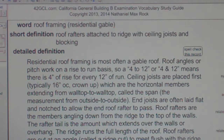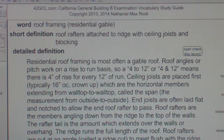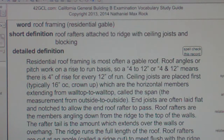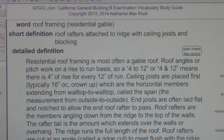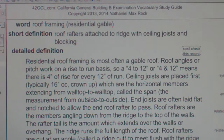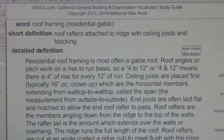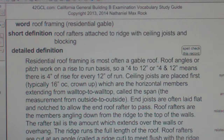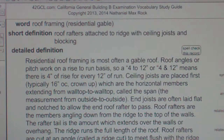Roof framing residential gable roof: rafters attach to ridge with ceiling joists and blocking. Residential roof framing is most often a gable roof. Roof angles or pitch work on a rise to run basis, so a 4 to 12, or 4 and 12, means there is 4 inches of rise for every 12 inches of run.